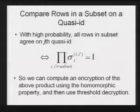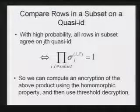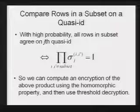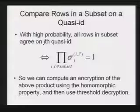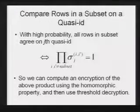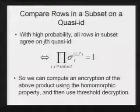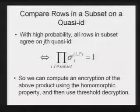Recall that we can compute all the encryptions of these sigmas in the first phase. We have all the encryptions of these sigmas. So all we need to do is: first, we multiply all these encryptions together using the homomorphic property of the encryption scheme, and then we use a threshold decryption technique to help the miner get the value of this product.